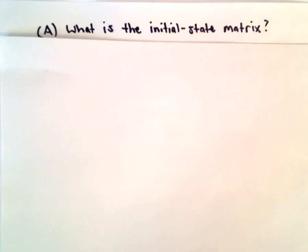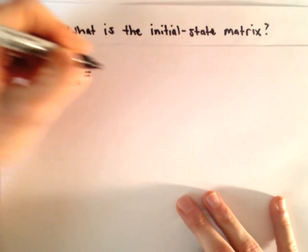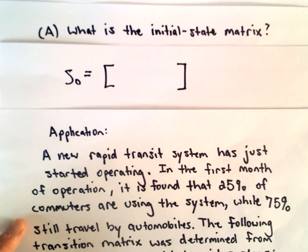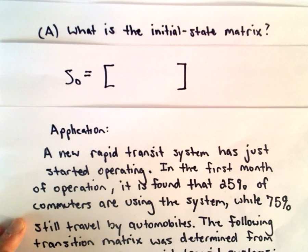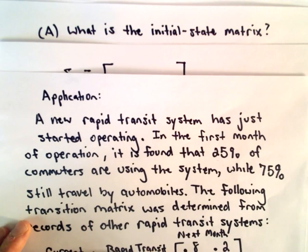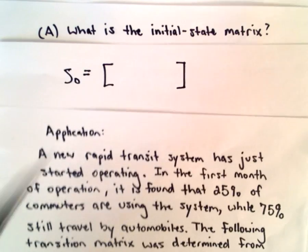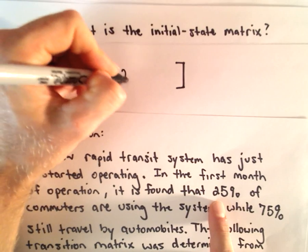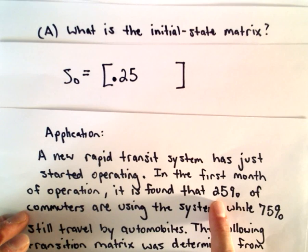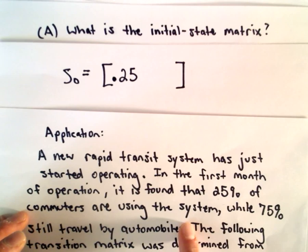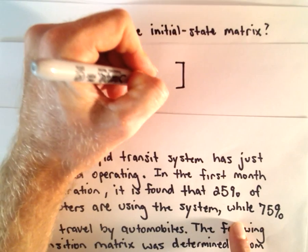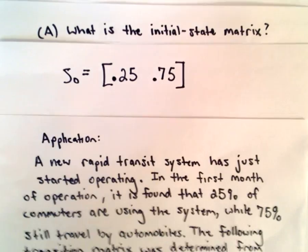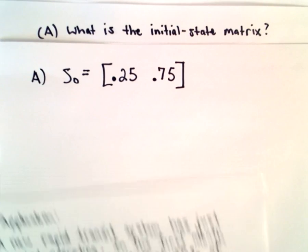To come up with the initial state matrix S sub zero, we just look at the proportion of people that were using rapid transit and the proportion using automobiles. We'll have rapid transit first and automobiles next. So 0.25 are using rapid transit and 0.75 are using automobiles. That's the answer to part A, the initial state matrix.